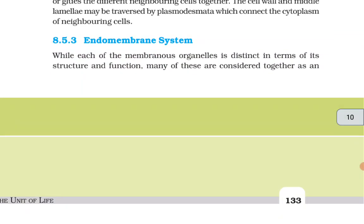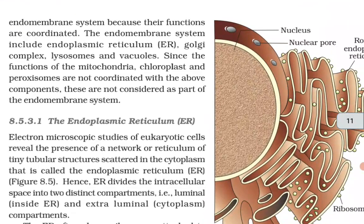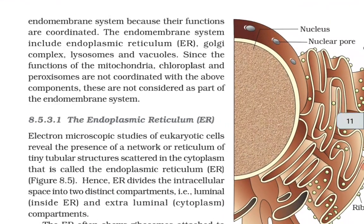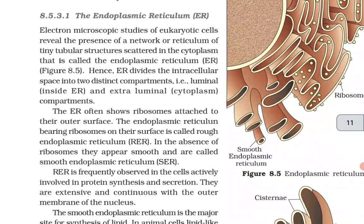Endomembrane system: while each membranous organelle is distinct in structure and function, many are considered together as an endomembrane system because their functions are coordinated. The endomembrane system includes endoplasmic reticulum, Golgi complex, lysosomes, and vacuoles. The functions of mitochondria, chloroplast, and peroxisomes are not coordinated with the above components, so these are not considered part of the endomembrane system.